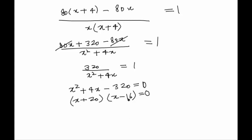Thus, since the product of two brackets is equal to 0, at least one of them should be 0. Therefore either x plus 20 is equal to 0, or x minus 16 is equal to 0, which would individually give us x is equal to minus 20 or x is equal to 16.